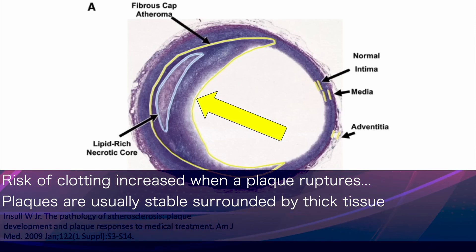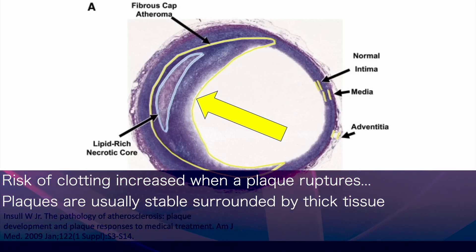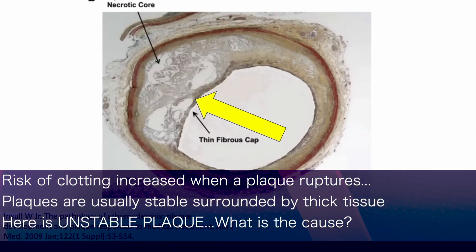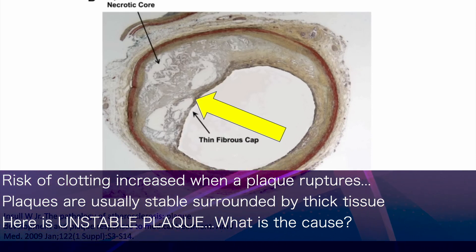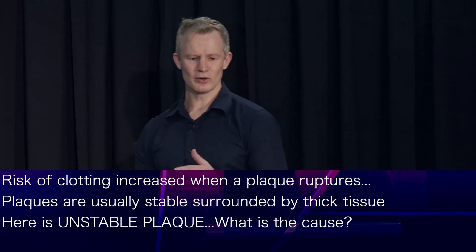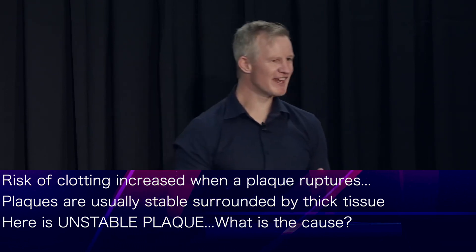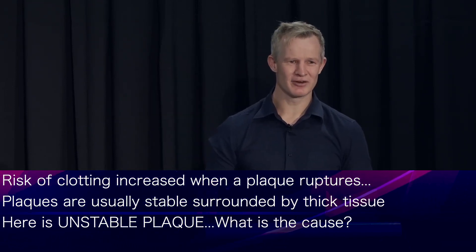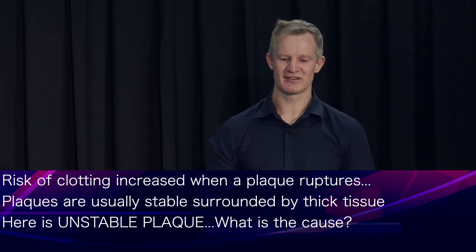The yellow arrow points to a relatively thick margin of connective tissue lying over the top of a plaque. This, on the other hand, is an example of an unstable plaque with only a thin layer of connective tissue over the top, which leads to the question: what causes thinning or destabilisation of this protective cap?